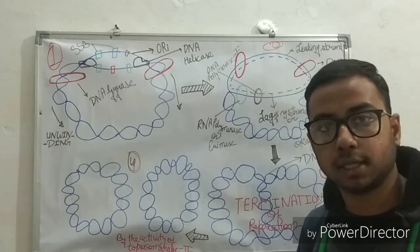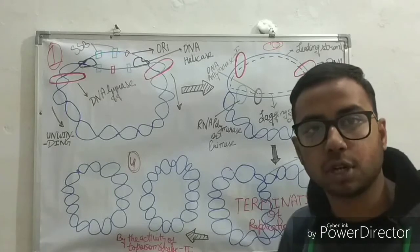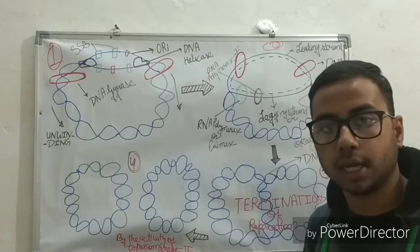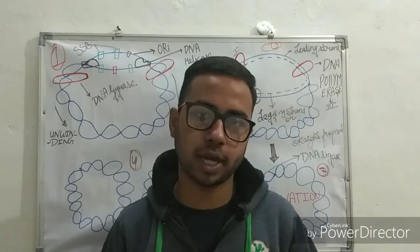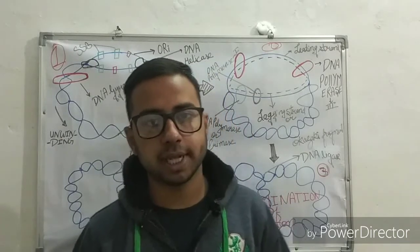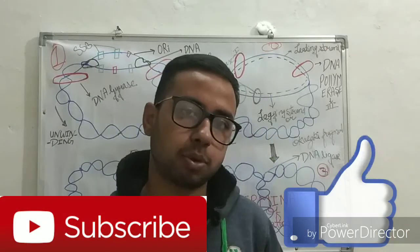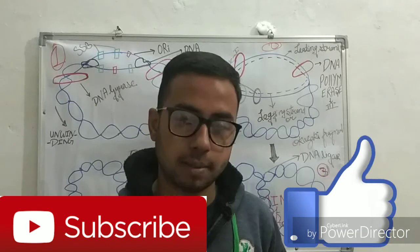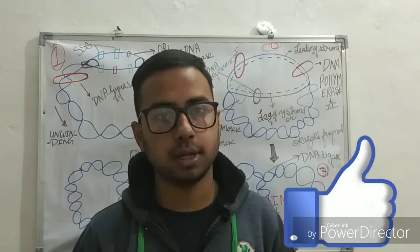After the action of DNA topoisomerase II, two DNAs are formed by replication in prokaryotes. That's about DNA replication in prokaryotes. Thanks for watching. Like and subscribe and also put some comments in the comment box if you have any questions. Thank you so much.